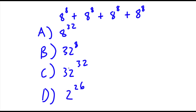So if you guys know how to solve this problem, you guys can try to find out which answer choice this is. Alright, so now to solve this problem, let's first go through all the answer choices, starting with A. How they got A was they kept the base the same. So they did 8 to the power of, then they added all the exponents.